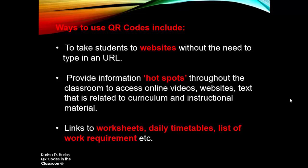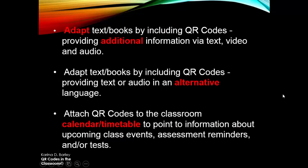We can link to worksheets, daily timetables, and lists of work requirements. We can send homework sheets home via a QR code and send them to parents so they know what their children need to do. We can adapt textbooks by including QR codes providing additional information via text, video, and audio. For example, with a poem, each stanza could have a QR code linking to commentary about what that stanza might mean, giving students better understanding. We could also have a teacher summarise chapters, or get students to do it themselves.